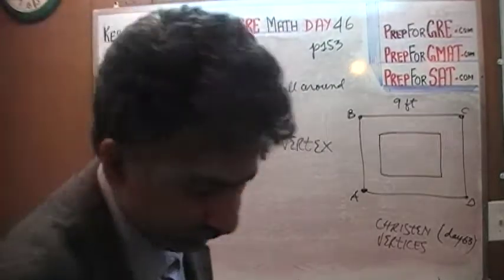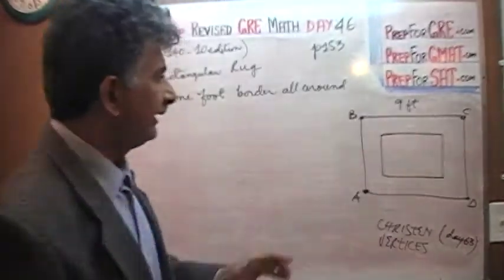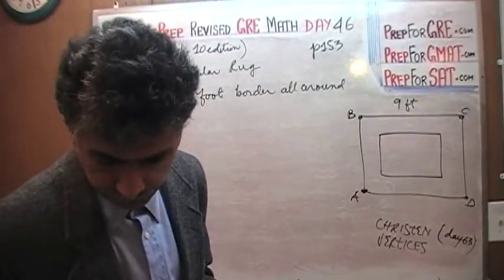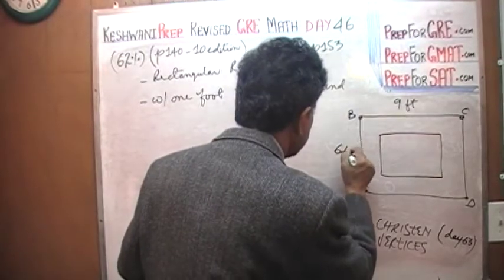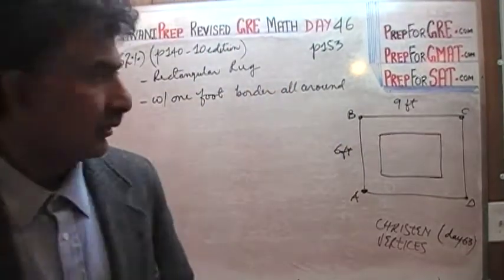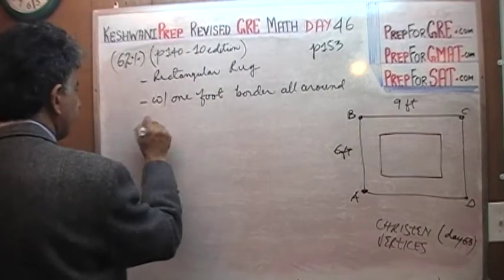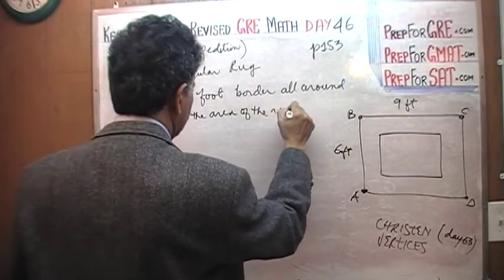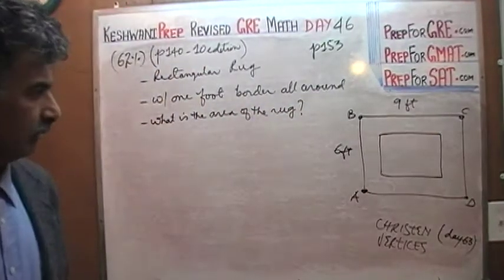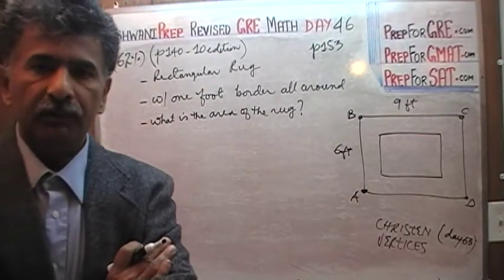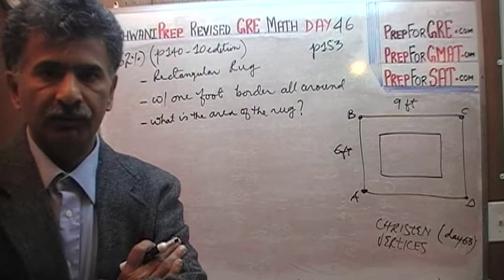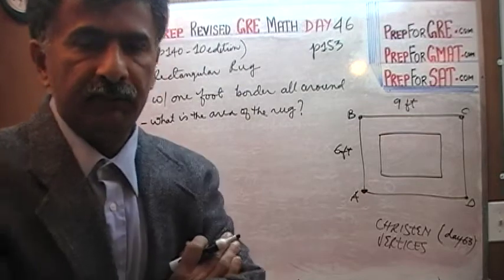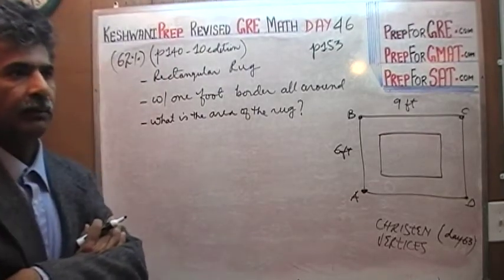Now that we have names for the corners, we can discuss the problem. We are told B to C is 9 feet and A to B is 6 feet. The question simply is: what is the area of the rug? Pause the video right now, solve the problem yourself, and resume once you have the answer. This is an easy question — not medium, not hard.